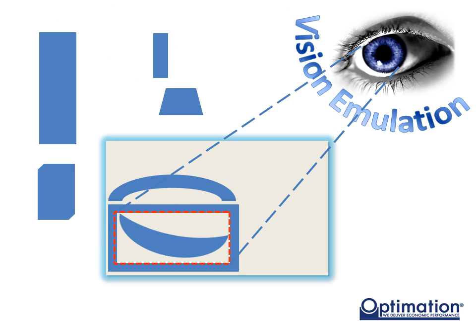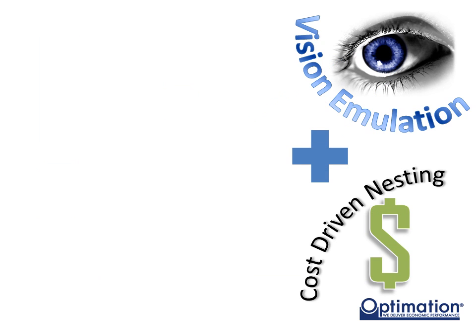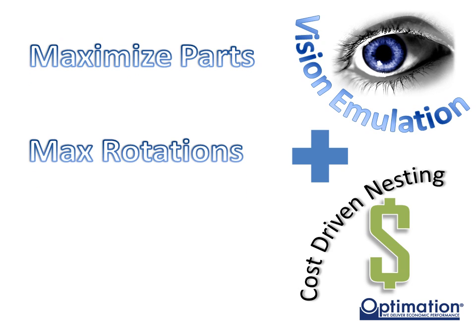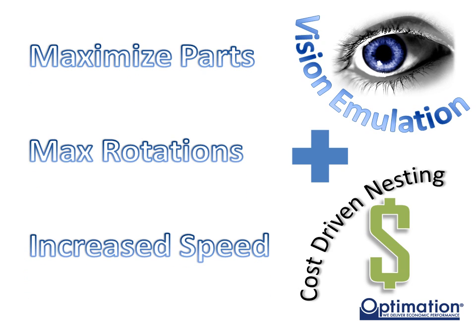This allows the system to run faster and with greater accuracy. When paired with cost-driven nesting for part selection, this system maximizes the available parts and possible rotations considered and increases nesting speed by reducing the nesting options to those most suitable to your manufacturing objectives.